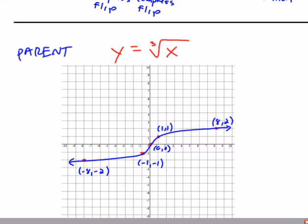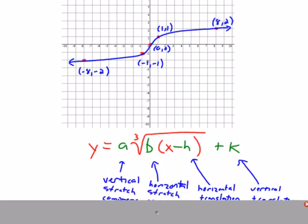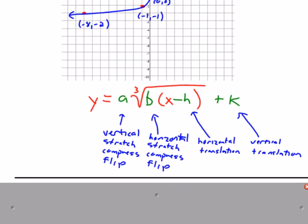You saw earlier that a cubic function looks something like this. Well, now a cube root is just turned on its side. Instead of points like (2,8), it's (8,2). If you were to continue going out, (27,3), (64,4), and so on and so forth.